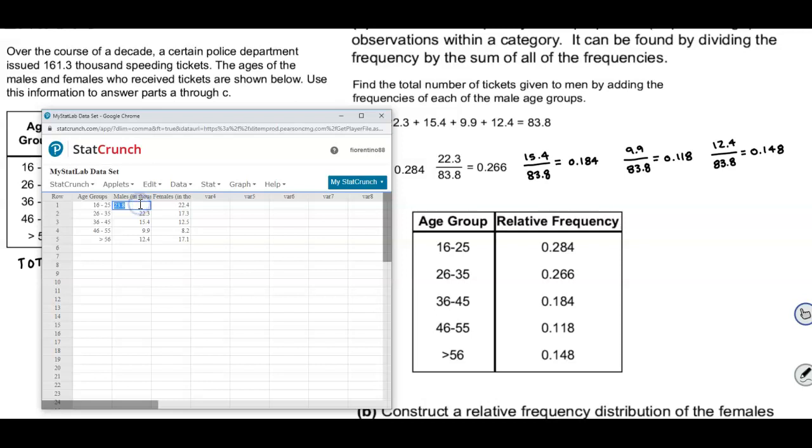So we can come in here and change the numbers that we have into our relative frequency. So we have 0.284 for the first one, 0.266, 0.184, 0.118, and then 0.148.